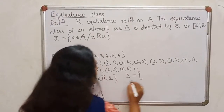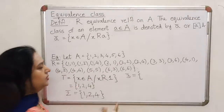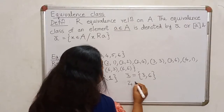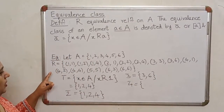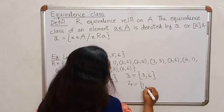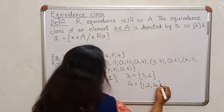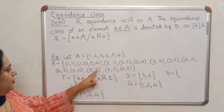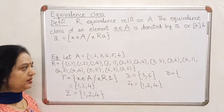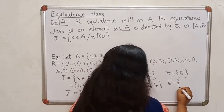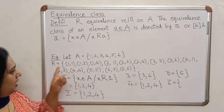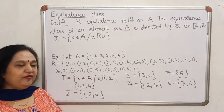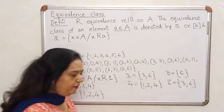The equivalence class of 3 contains: 3 (related to itself) and 6 (since 6 is related to 3), so it is {3, 6}. The equivalence class of 4 contains 1, 2, and 4 — the same as before — giving {1, 2, 4}. The equivalence class of 5: five is related only to itself, so it is {5}. The equivalence class of 6 contains 3 and 6, giving {3, 6}.